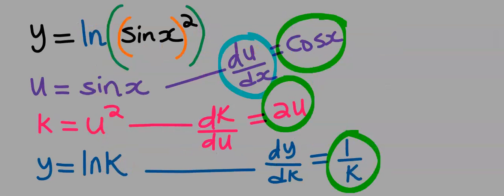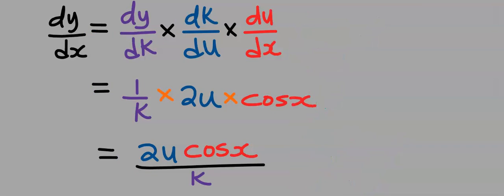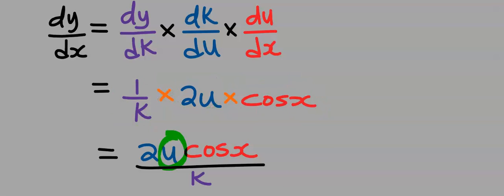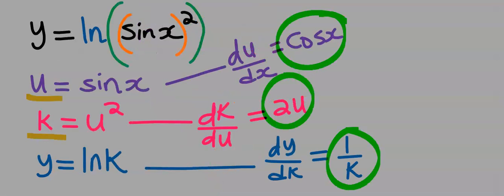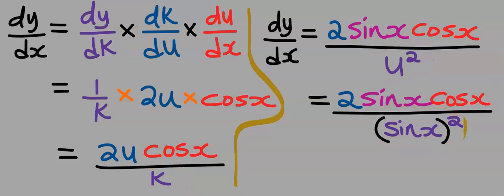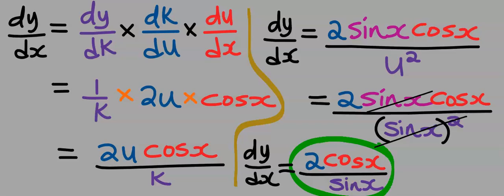Hence we are multiplying each of these to obtain our dy/dx. After multiplying each of these functions, we replace the values of u and k from our initial assumptions: u is sin(x), while k is u², and u² is sin²(x). Next, one of the sin(x) terms cancels with one of the sin(x) terms, and you now have 2·cos(x) divided by sin(x).